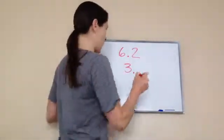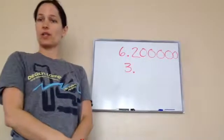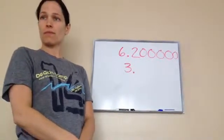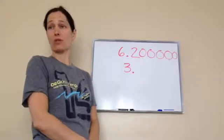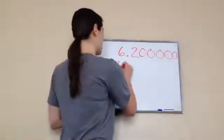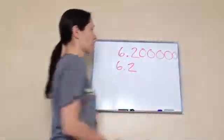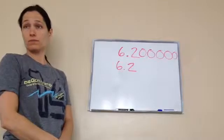Do you remember me telling you, Eli, that I could add as many zeros at the end as I wanted to? And it still equals the same amount, 6.2. Remember that? So if I had 6.2 and 6.20000, they both are equal, okay?